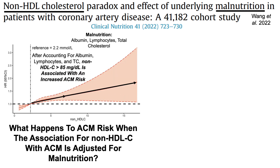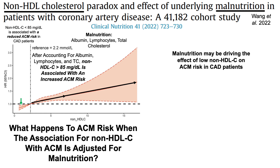It looks like a totally different curve. After accounting for albumin, lymphocytes, and total cholesterol, higher non-HDL cholesterol — greater than 85 milligrams per deciliter — is now associated with an increased all-cause mortality risk. Conversely, the non-HDL cholesterol paradox is gone: having a non-HDL cholesterol of less than 85 mg/dL is now significantly associated with a reduced all-cause mortality risk in coronary artery disease patients. Malnutrition may be driving the effect of low non-HDL cholesterol on all-cause mortality risk in CAD patients.